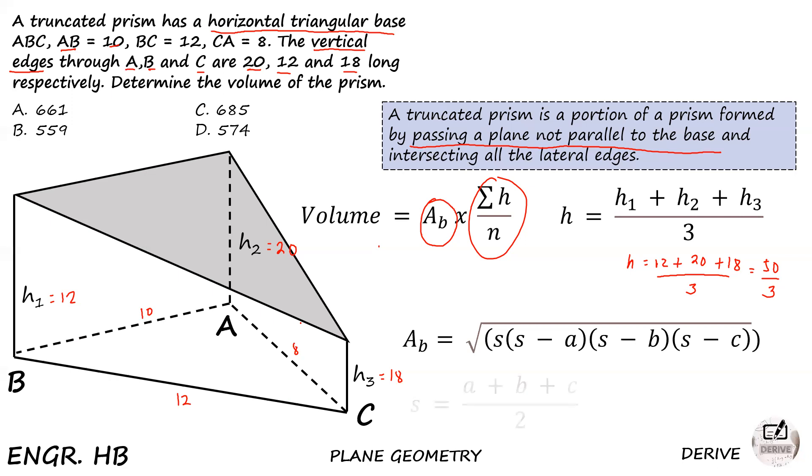It is the square root of S times S minus A, S minus B, S minus C, where ABC corresponds to the three sides of the triangle. S is the semi-perimeter, the summation of the three sides divided by 2. It's not an average - semi-perimeter means half of the perimeter. So S equals 10 plus 12 plus 8 divided by 2, which equals 30 divided by 2 equals 15.